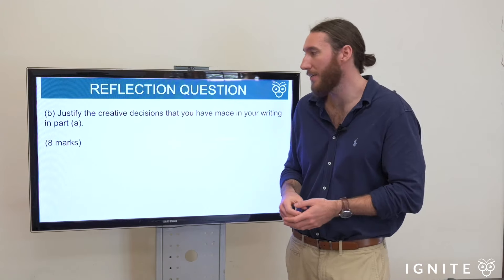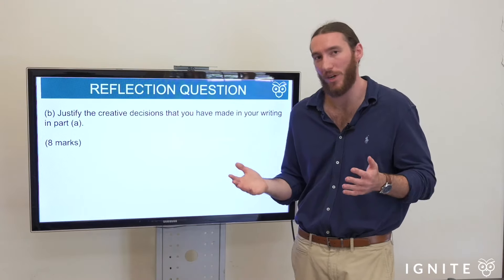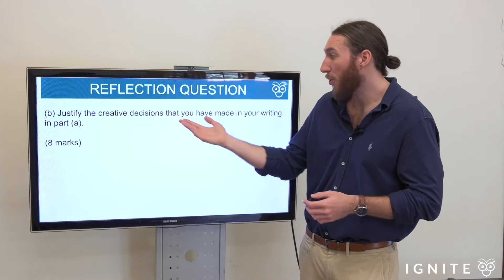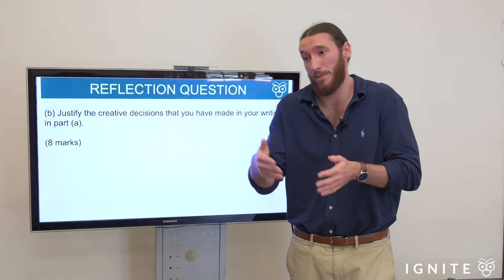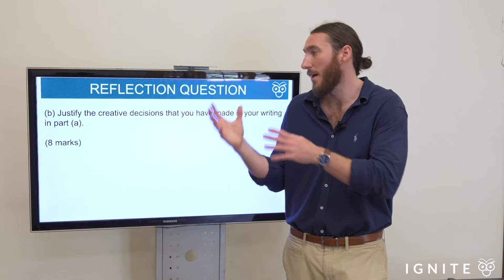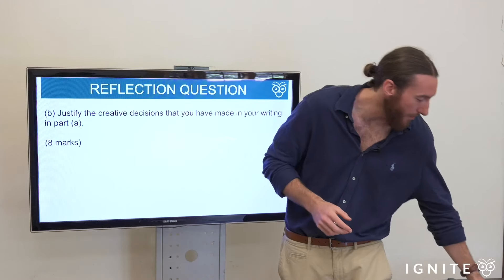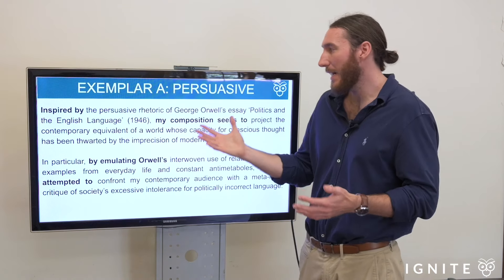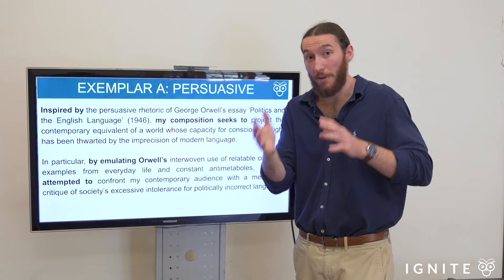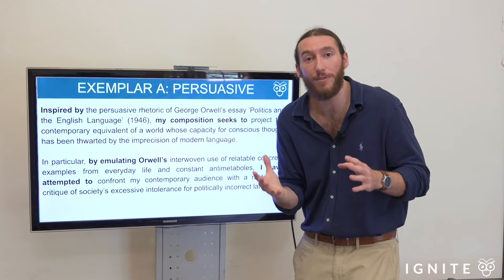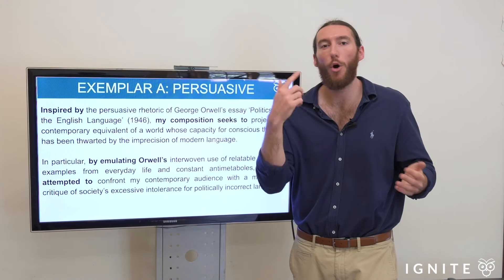Here's an example of a question provided by NESA in one of the sample papers — you often see a question of this kind for the Part B reflection question across the board: 'Justify the creative decisions that you have made in your writing.' It doesn't explicitly say to tell us about the stylistic elements of a prescribed Module C text, but more often than not they do. This implicitly means do that, so you're still going to refer to a prescribed text even when it doesn't explicitly say so. Here is an exemplar for a persuasive text — it doesn't matter that it's persuasive, this is still going to be relevant. The point is to show you how to express yourself and introduce, and it can be applied for an imaginative or discursive composition.